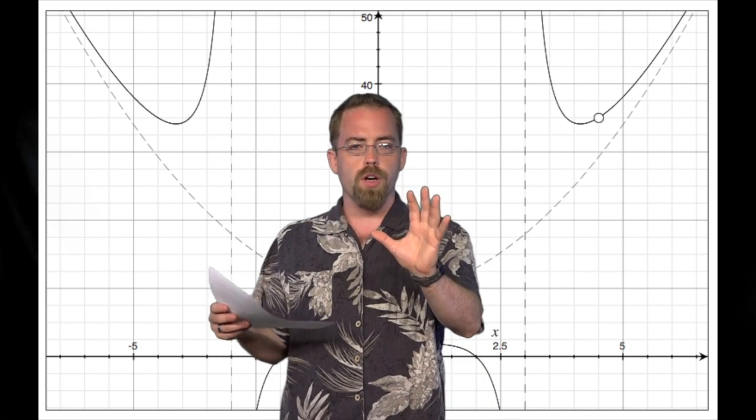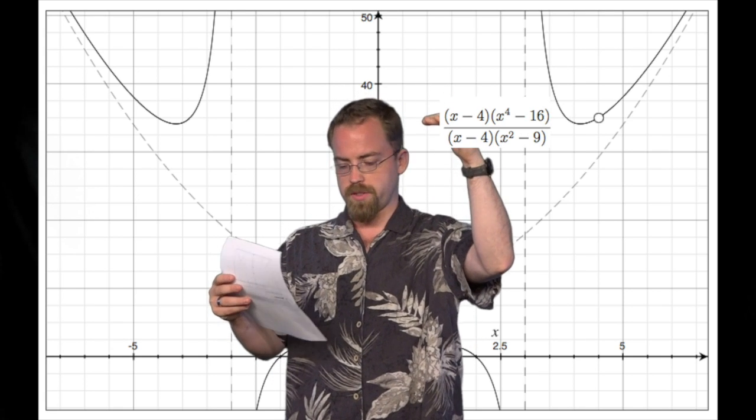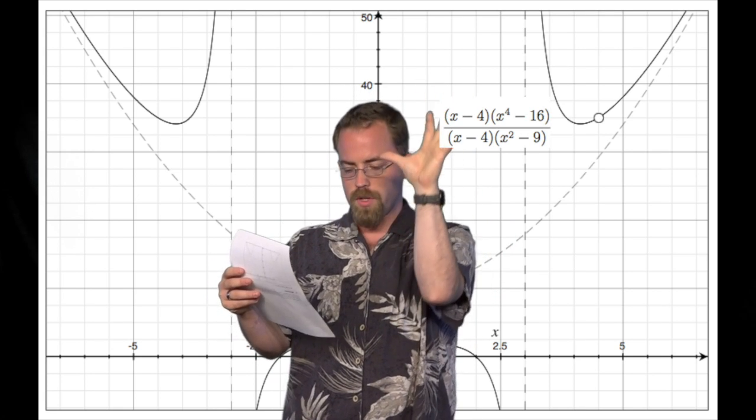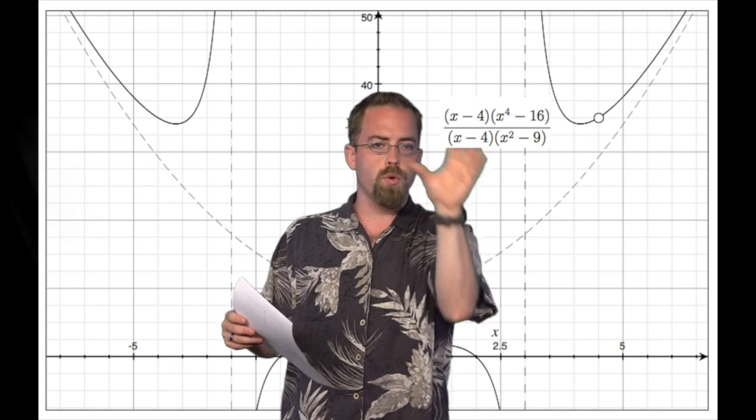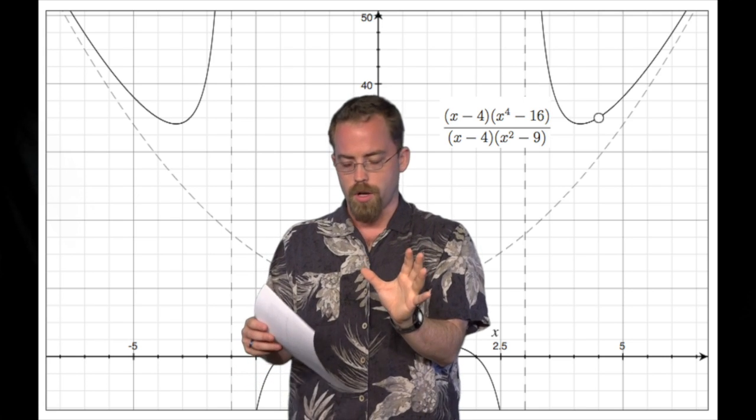So you should have on a piece of paper in front of you a fraction where the numerator is (x minus 4)(x to the fourth minus 16). And then in the denominator, we've got (x minus 4)(x squared minus 9).